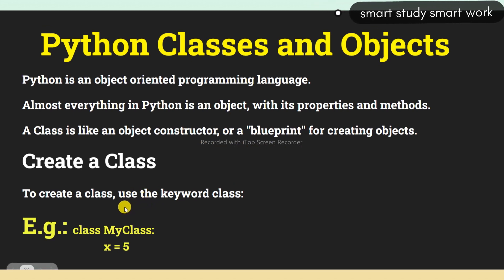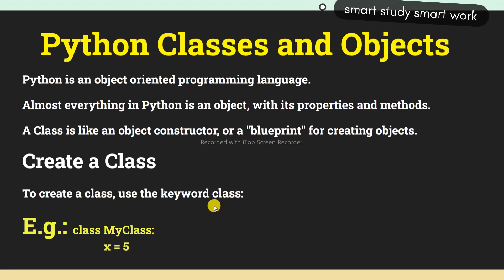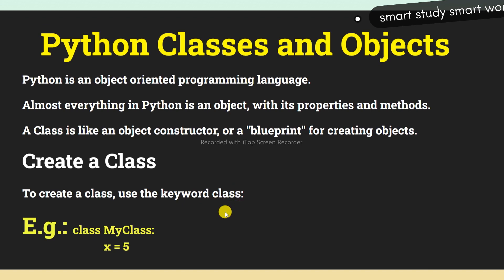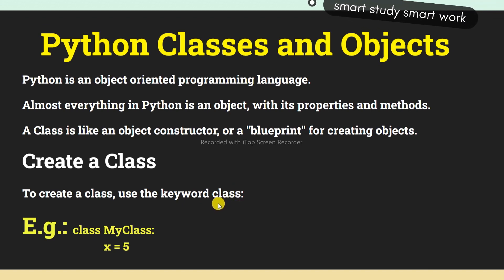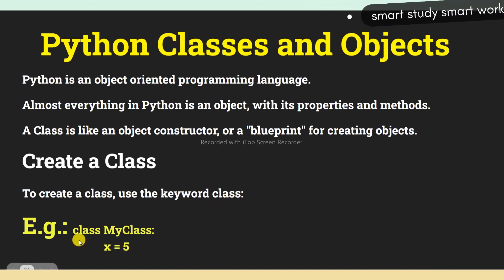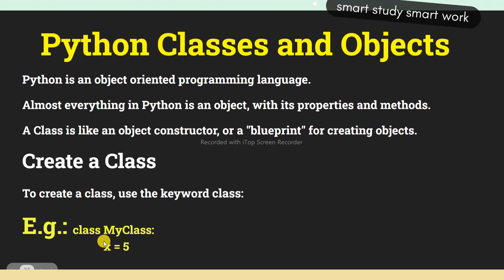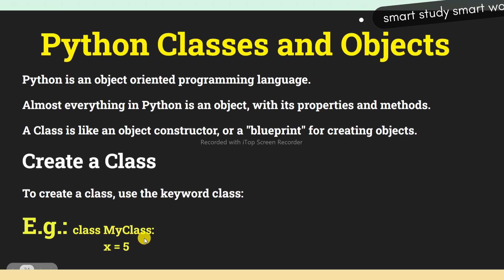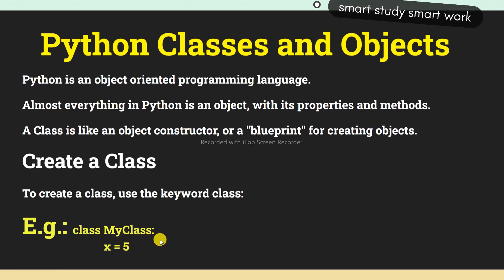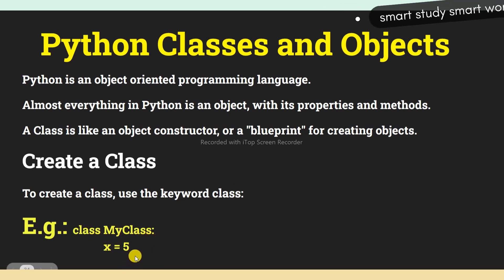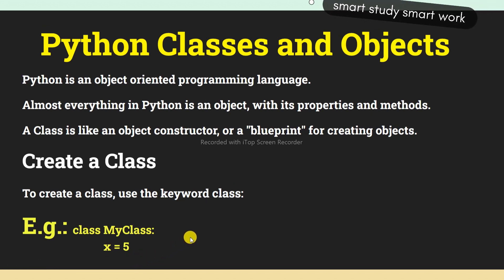Now, how to create a class? To create a class, use the keyword 'class'. Here in the example, I have created a class, I have given the name 'MyClass', and inside the class I have declared x equal to 5.